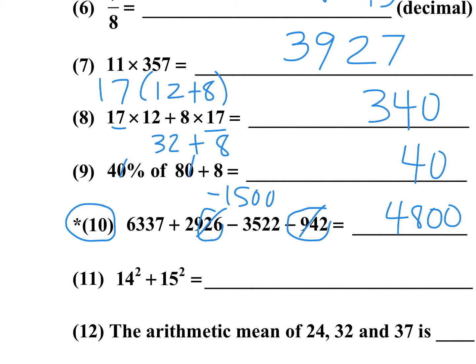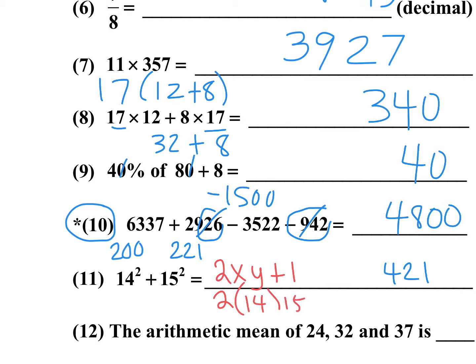Number 11: 14 squared is 196 and 15 squared is 225. Adding 196 plus 225 — add 4 to 196 and subtract 4 from 225, giving 421. There's also a shortcut for the sum of two consecutive squares: use 2xy + 1. Here that's 2 times 14 times 15 plus 1. 2 times 15 is 30, times 14 — write the 1 down and 14 times 3 is 42, giving 421.